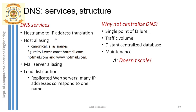DNS maintains a large collection of IP addresses for all replicated web servers. For instance, it stores the IP address of the Google server in Dakshin Kannada, the Mumbai Google server, and the Delhi Google server — all replicated duplicate web servers. From that collection of IP addresses, the nearest one is extracted and given to the user's web browser.